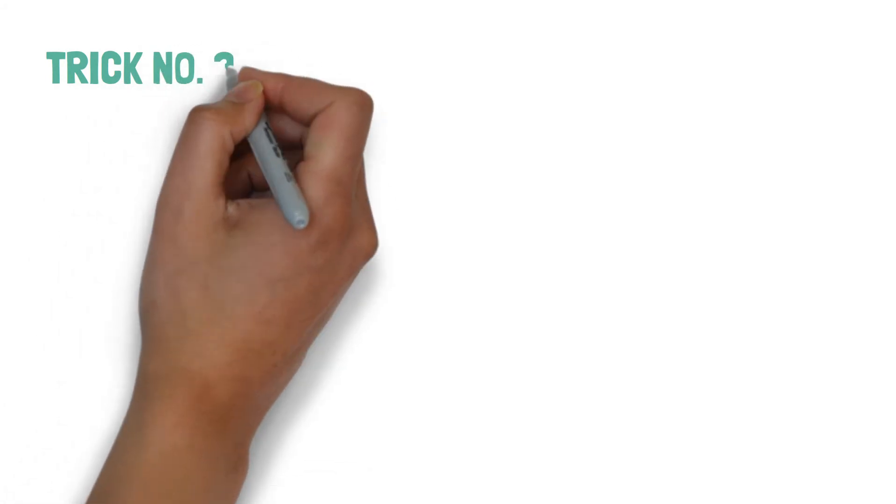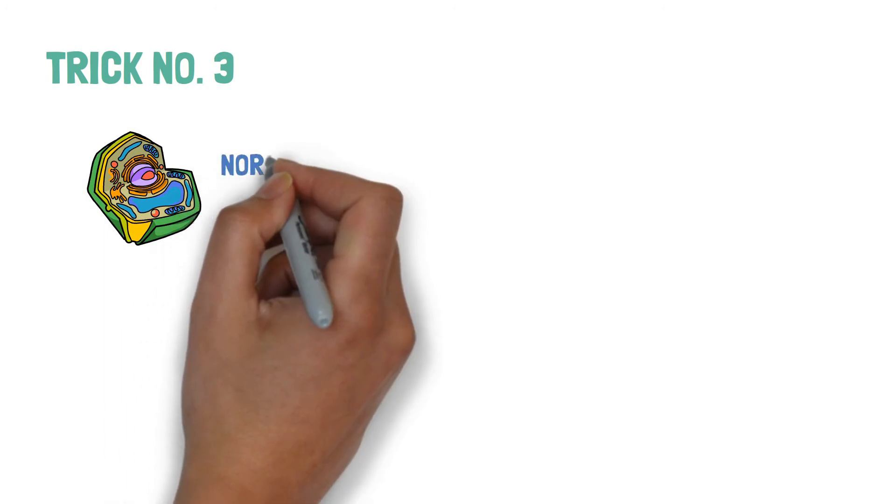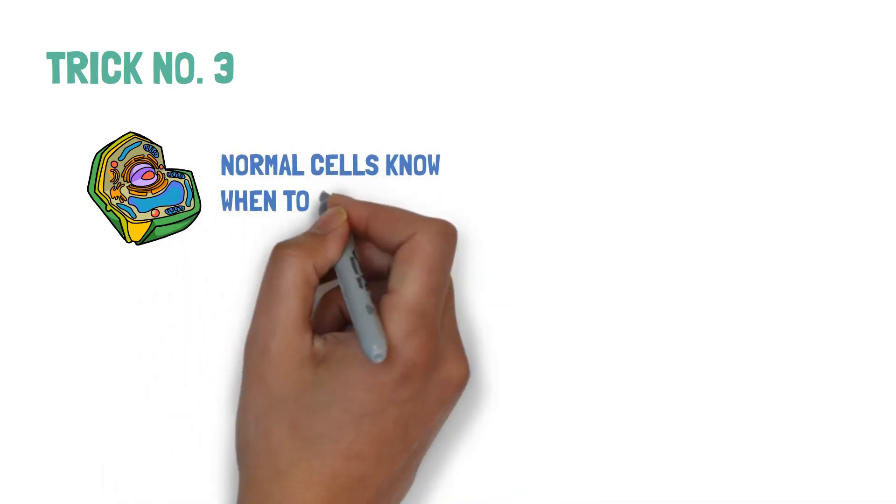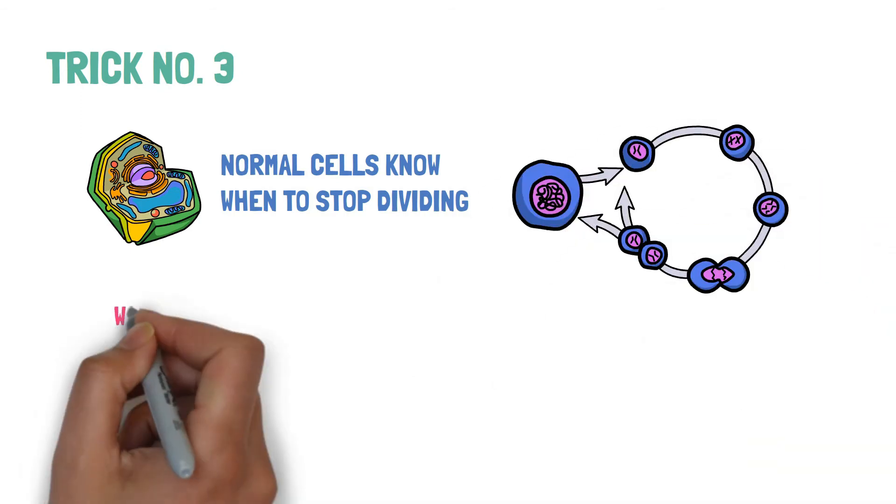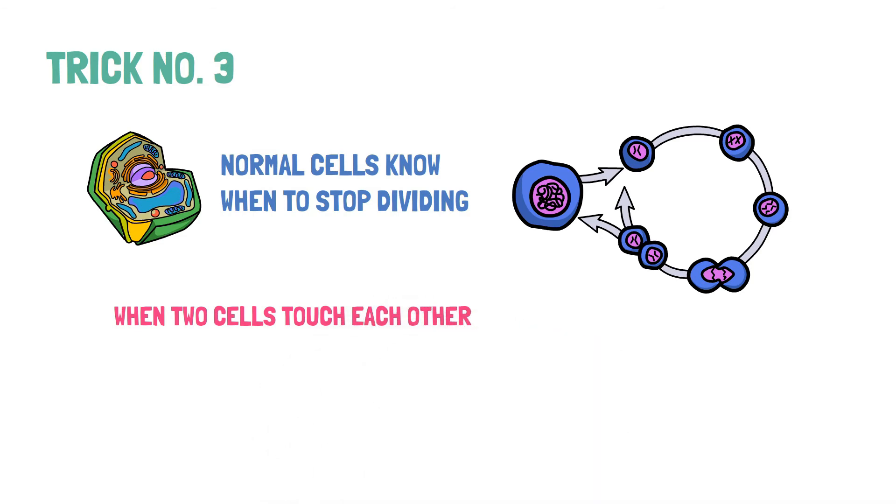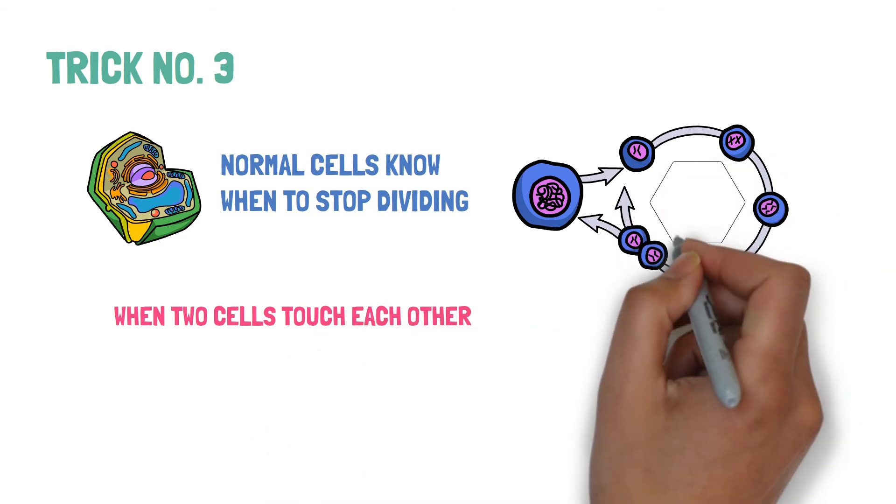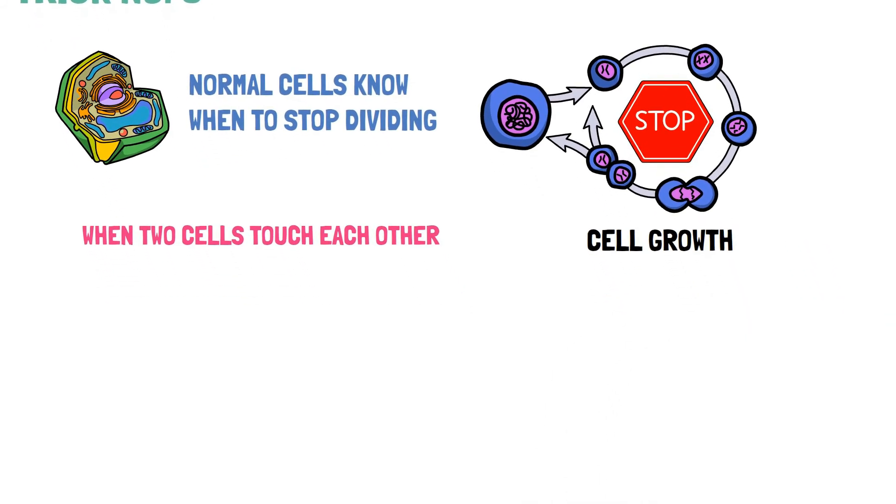The trick number three is that the normal cells are very smart and know when to stop cell division. Whenever two cells touch each other the cell division stops because the body knows that the area is filled up with cells and there is no further space available to accommodate the newly growing cells so the cell division stops.